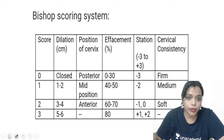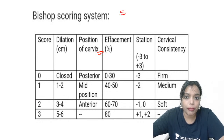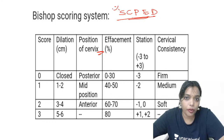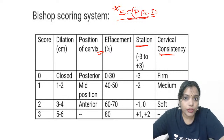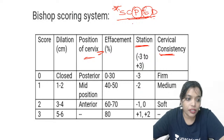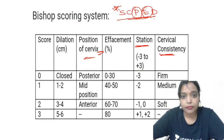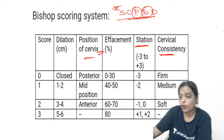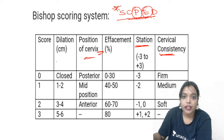So what do we mean by Bishop's Score? I want you to remember the mnemonic SPEED to remember the Bishop's Score. The spelling of SPEED is a bit different here, but this is the mnemonic. S tells about station, C — consistency of the cervix, P — position of the cervix, E — effacement, D — dilatation. So these are the components included in the scoring system.